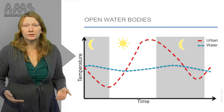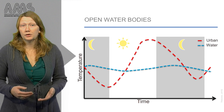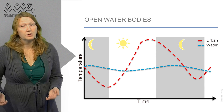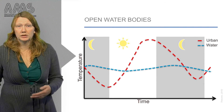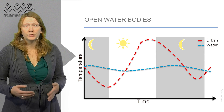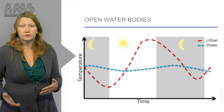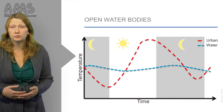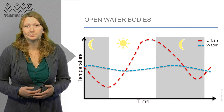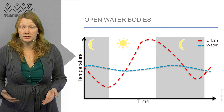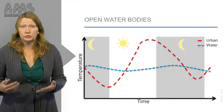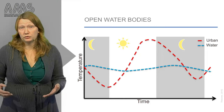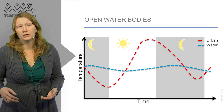Now we will have a look at the influence of open water on urban temperature. Water is thermally slow, meaning it responds slowly to changes in air temperature. Therefore, the temperature of water varies very little throughout the day, whereas air temperature can fluctuate more than 10 degrees Celsius.